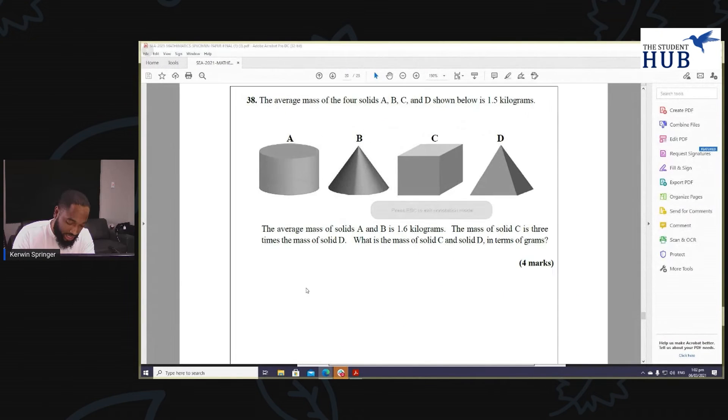Now let's see what's going on in this question. The average mass of four solids A, B, C, D is 1.5, so right away they gave us the mean, the average, it's 1.5 kilograms. So I can immediately multiply this by 4 and get the sum of all the masses.